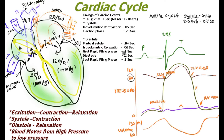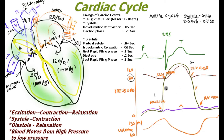With the AV valves open and atrial pressure higher than ventricular pressure, blood flows into the ventricle. This is the first rapid filling phase, lasting around 0.1 second, followed by a continuous filling phase called diastasis lasting around 0.2 seconds. The last rapid filling phase coincides with the next atrial excitation impulse. Closure of the AV valves produces the first heart sound, while closure of the semilunar valves produces the second heart sound.